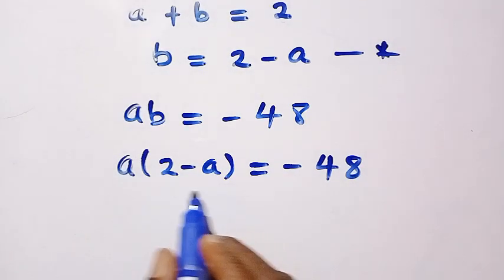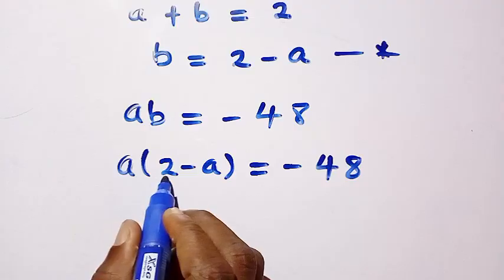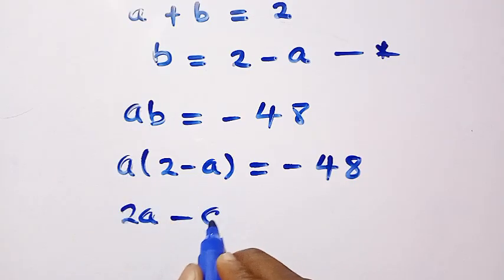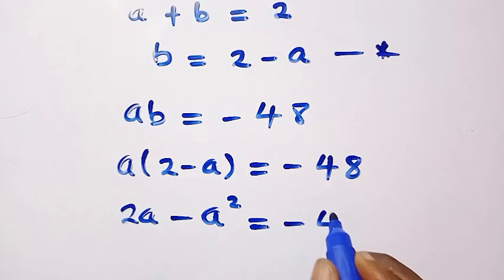Let's open this parenthesis with a. We have a times 2, we have 2a minus a times a, that is a squared, equals minus 48.